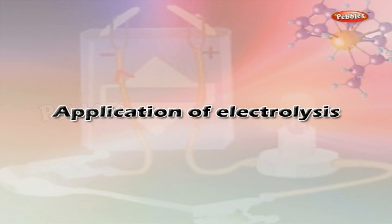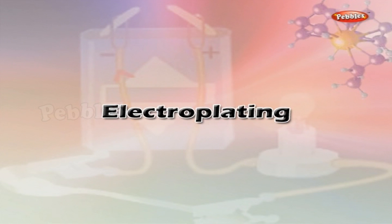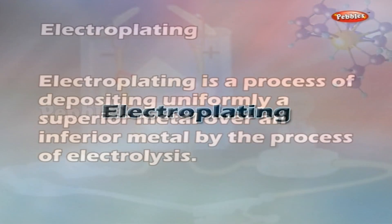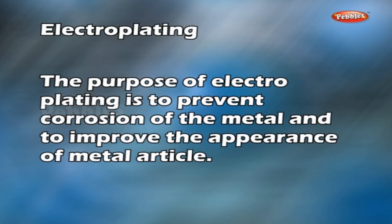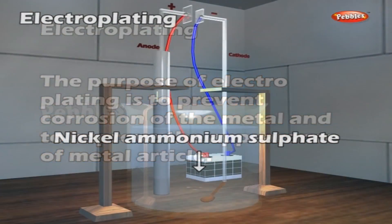Application of Electrolysis — Electroplating: Electroplating is a process of depositing uniformly a superior metal over an inferior metal by the process of electrolysis. The purpose of electroplating is to prevent corrosion of the metal and to improve the appearance of the metal article.